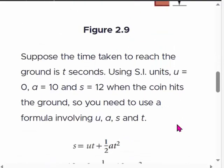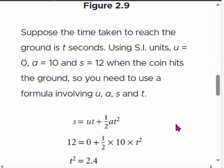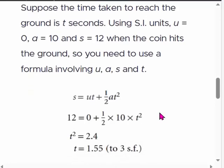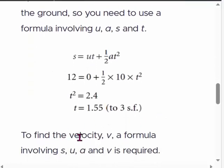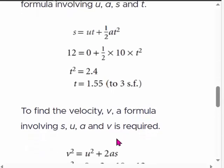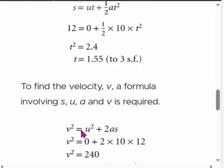We can use two equations: either v = u + at, or to find the velocity v, a formula involving s, u, a, and v can also be used. Either v = u + at or v² = u² + 2as.